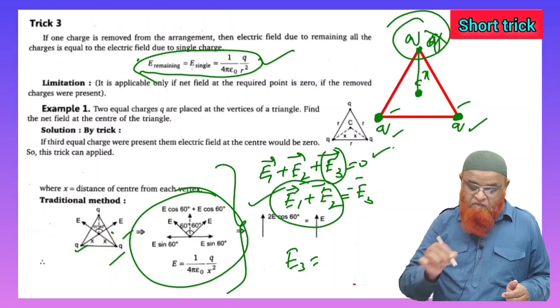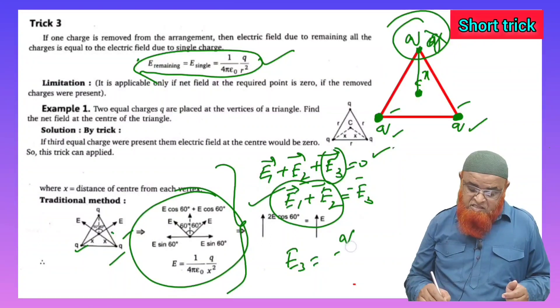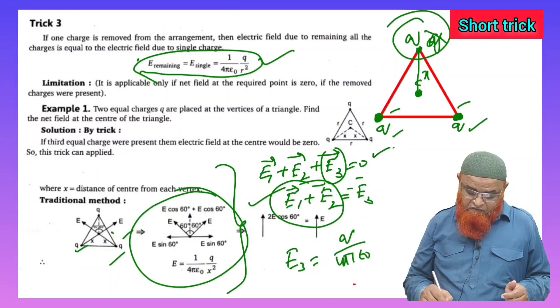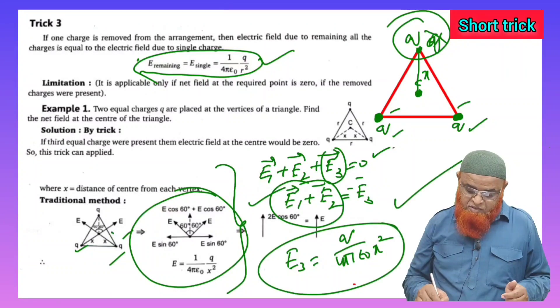That is the meaning of E_remaining equals E_single. So E3 is calculated as q/(4πε₀x²). So directly you are getting the answer.